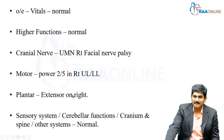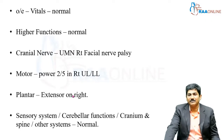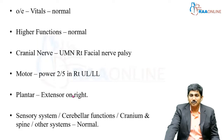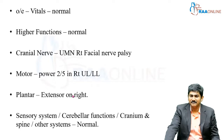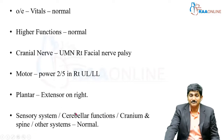On examination, the vitals and higher mental functions were normal. In cranial nerve examination, upper motor neuron type of right facial nerve palsy was present. Motor power 2/5 in right upper and lower limbs. Plantar extensor on the right side. Left power is normal and left plantar is normal. The sensory system, cerebellar functions, and other systems are normal.